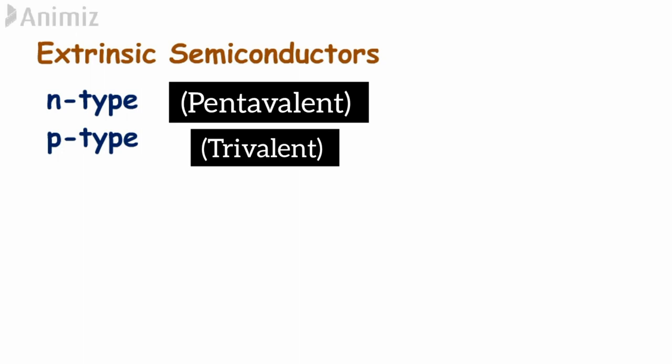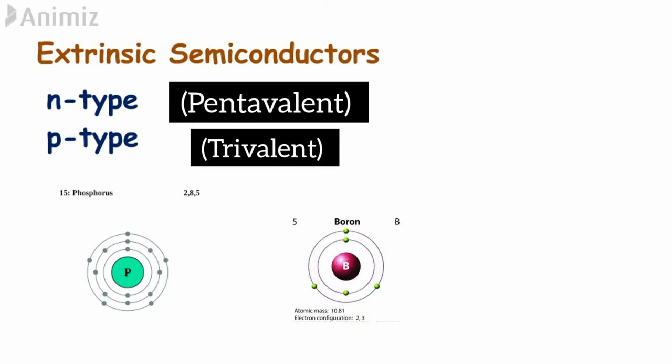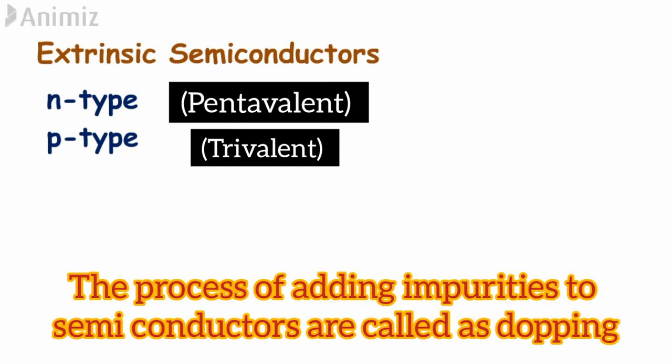Extrinsic semiconductors are two types, those are n-type and p-type. We call n-type as pentavalent and p-type as trivalent. Pentavalent means it has five electrons in the outermost shell and trivalent means it has three electrons in the outermost shell. So the group five elements such as phosphorus, arsenic, antimony comes under pentavalent, and group three elements such as boron, gallium, indium comes under trivalent. And also you have to know that process of adding impurities to the semiconductor is called as the doping.